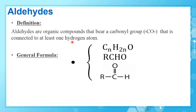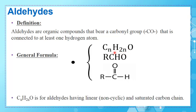Let's look at the general formula to understand. The general formula is CₙH₂ₙO. This general formula is for aldehydes having a linear — meaning non-cyclic — and saturated carbon chain. This year we have to deal only with aldehydes having linear and saturated carbon chains, so we have the right to use this as the general formula for aldehydes.